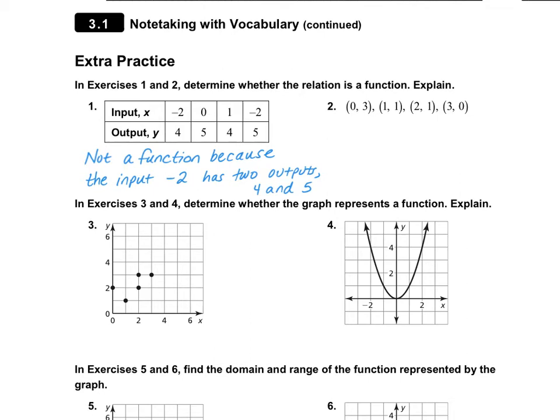Let's take a look at number two. Zero as an input has three and there are no other zeros in the input. One has only one output, two has only one output, and three has only one output.